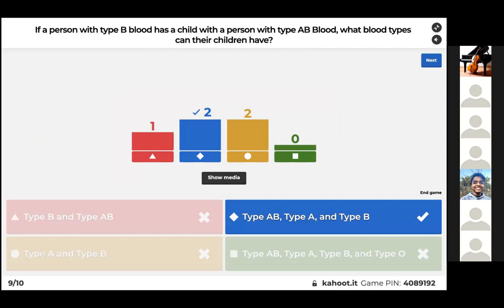For the blood type question, you have to do some quick thinking with Punnett square combinations. You know the genotype of the person with type AB blood, but for type B, you could either have two B alleles or one B and one lowercase i (which is O). You can have AB by taking B from the first person and A from the second; type A by taking O from the first and A from the second; and type B by taking O from the first and B from the second. Type O is not possible because the person with AB blood can't contribute the second O allele needed.